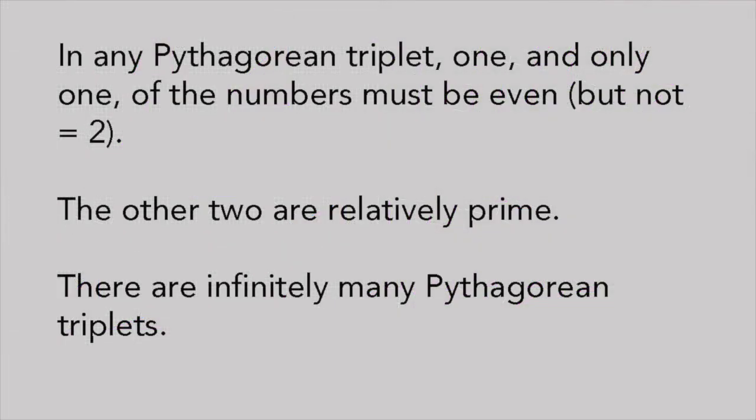In any primitive Pythagorean triplet, one and only one of the three numbers must be even, but can't equal 2. The other two numbers are relatively prime, in other words, have no common divisor other than one.